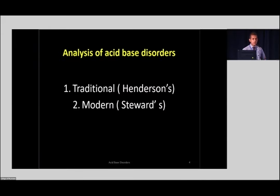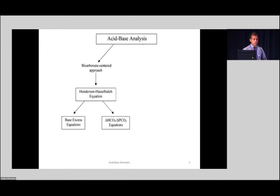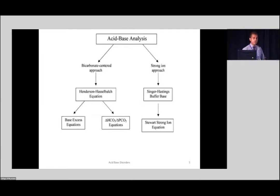I will go by this traditional method first since most of us are familiar with it. Acid-base analysis has the traditionalist bicarbonate-base approach, which most of you are familiar with. There are two methods within it: base excess equations, and also the bicarb-to-CO2 ratio. The base excess story came from Copenhagen in the mid-1900s. The bicarb-to-CO2 ratio was the initial introduction by Henderson and Hasselbalch. The strong ion approach was also based on the original thought of Singer and Hastings in the 1940s, and later Stewart used the same principle to analyze it in a better way.